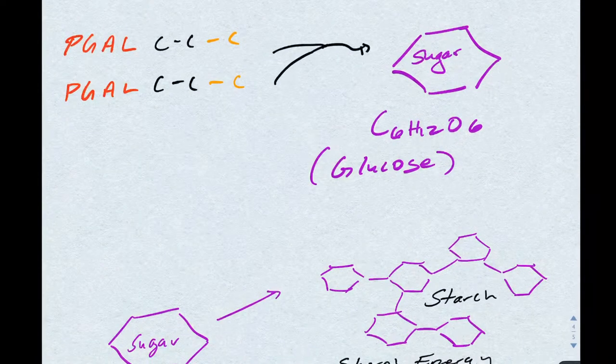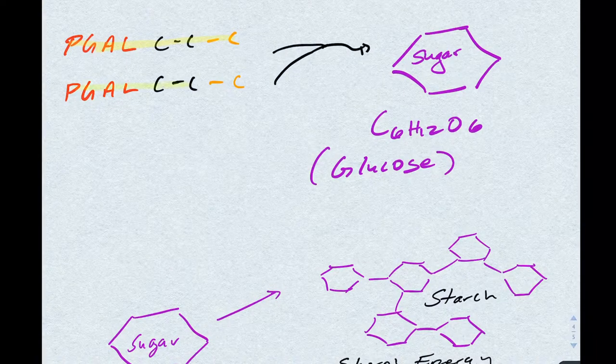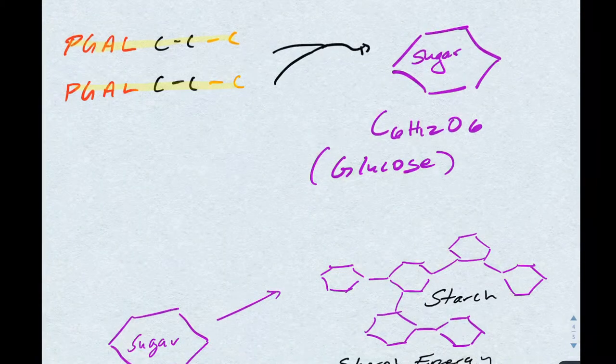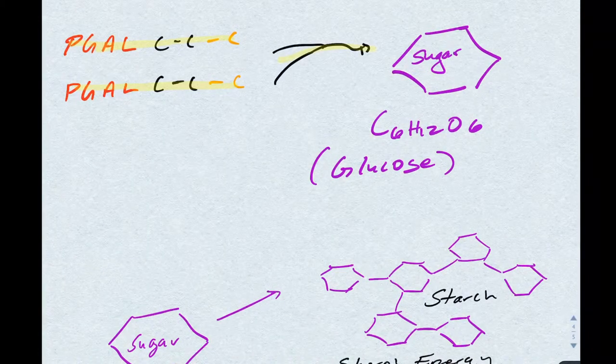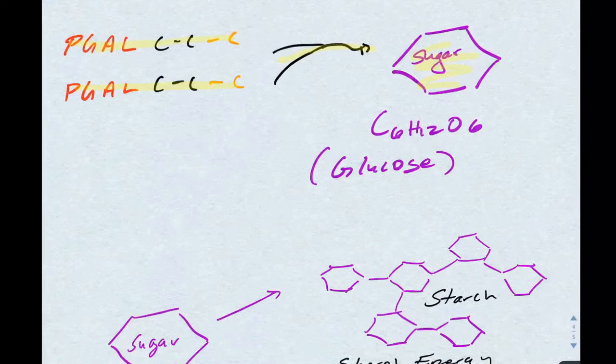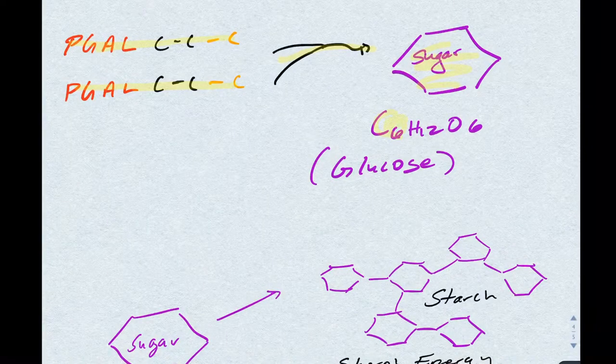After two rounds of carbon reactions, we have two PGALs, each with three carbons. The plant then assembles sugar from these two PGALs to make a glucose molecule, which has six carbons.